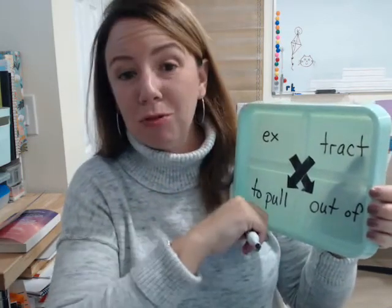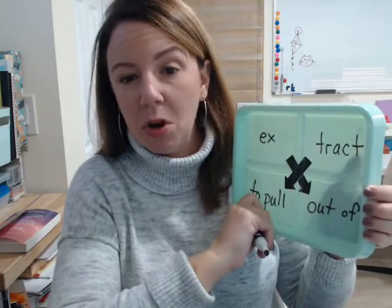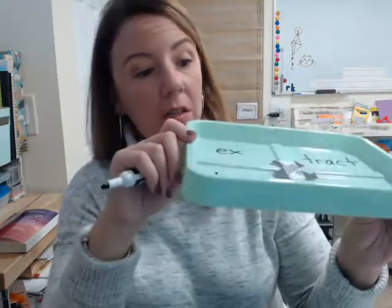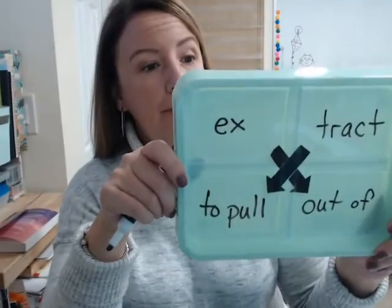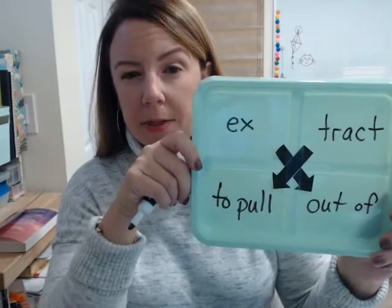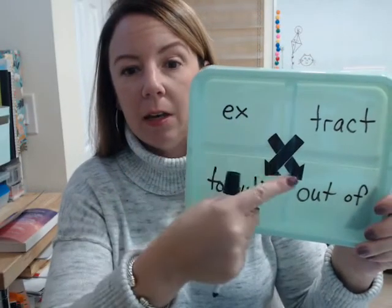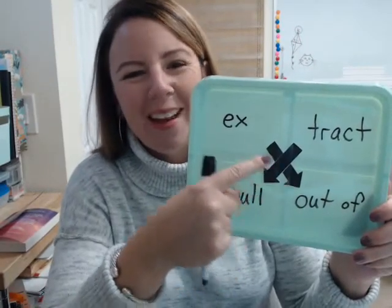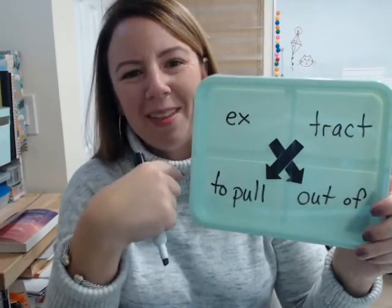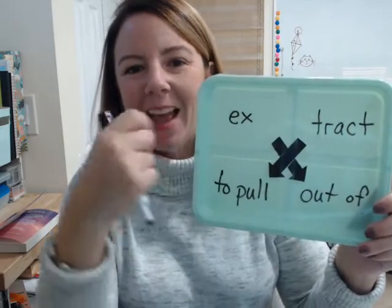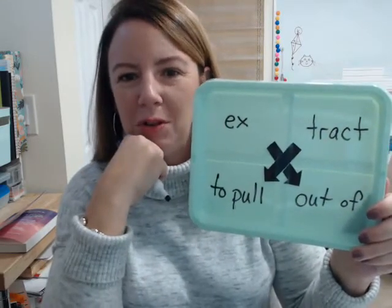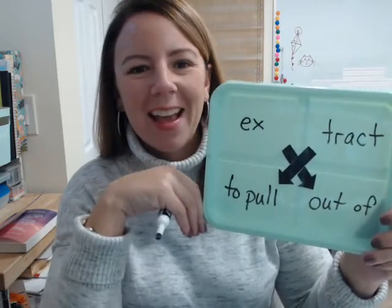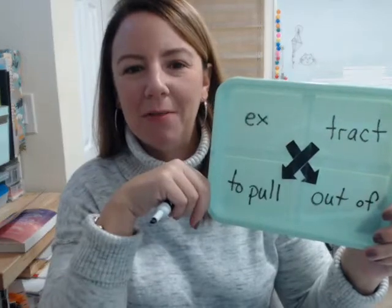So try this out with your students and let me know how it goes. Once again, this is just a little plastic divided tray, a little smaller than a piece of paper, and I just taped little paper arrows that I made and printed from my computer. Try it out with the different morphemes and the meanings and see if that helps your students with understanding the meanings of these words, practicing writing them, and learning those definitions.